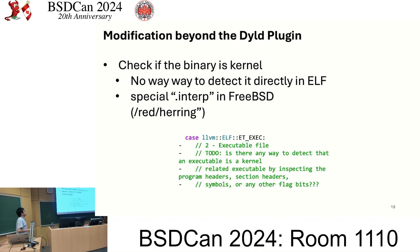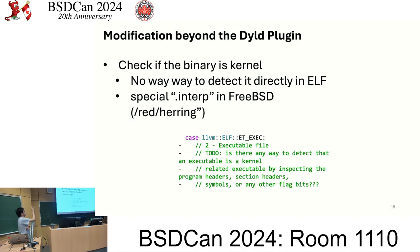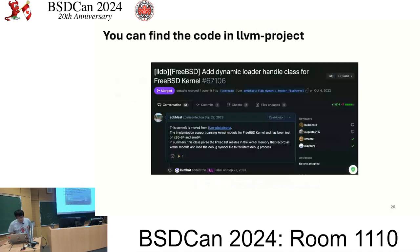The last thing is how to check if the binary is a kernel. ELF file format doesn't have a file type called 'kernel' — though Mach-O does. Fortunately, the FreeBSD kernel has a special interpreter section, and the content of this section is a specific string. So I just check if the interpreter section has that string as content. My work has been merged into LLVM, and it was also merged into FreeBSD one or two months ago. Thanks to those who maintain LLVM in FreeBSD.